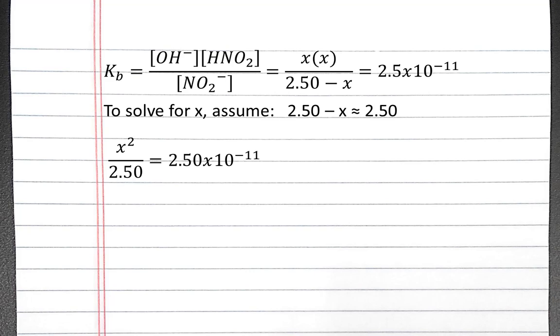We can multiply both sides by 2.5, and then take the square root of both sides to solve for X. And X equals 7.9 times 10 to the negative 6th.